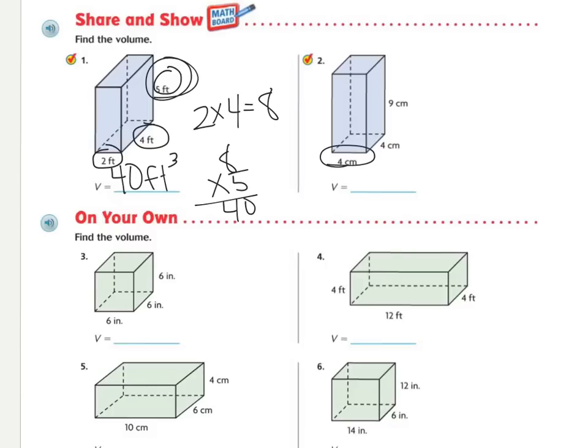Let's do the next one. 4 times 4 is 16. And 16 times 9. 9 times 6 is 54. 9 times 1 is 9. 9 plus 5 is 14. So it's 144 centimeters cubed.